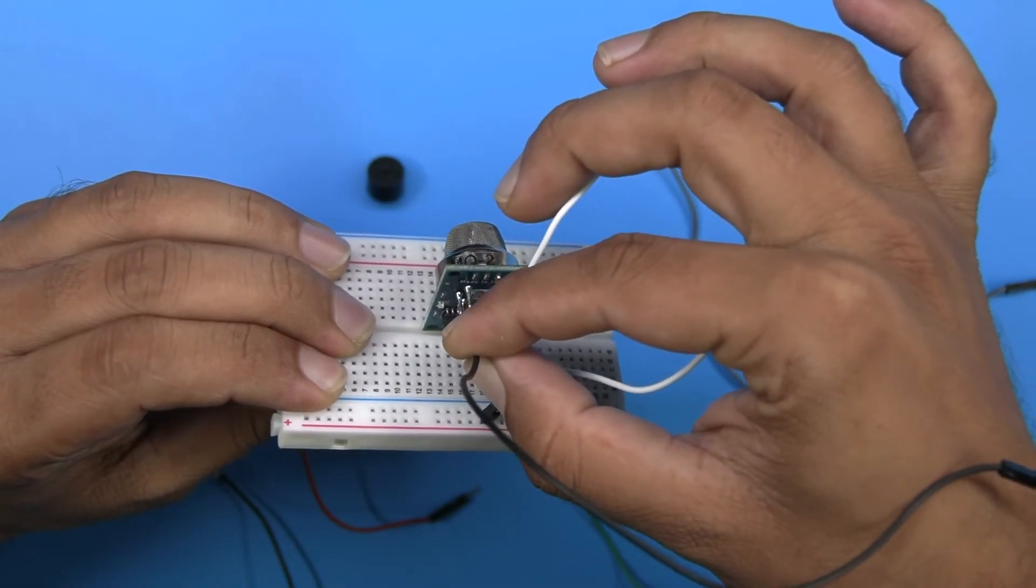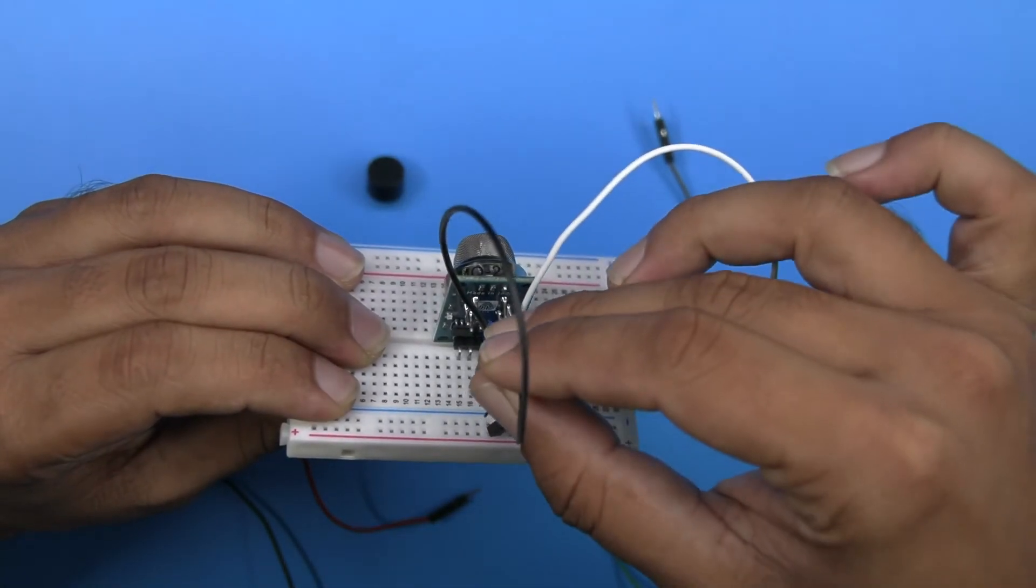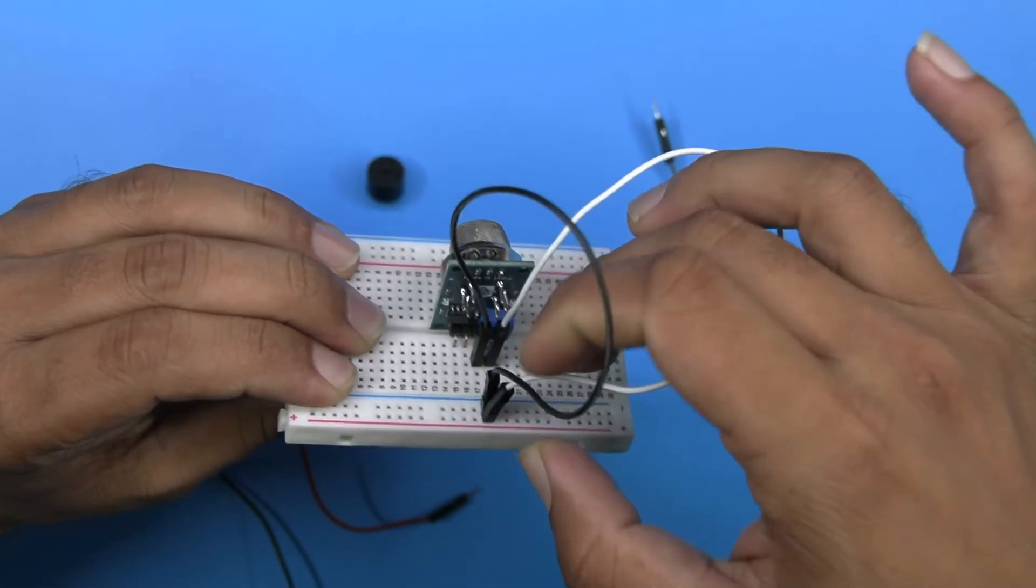Insert the black wire on the ground of sensor and similarly connect one side on the power pins marked as blue.